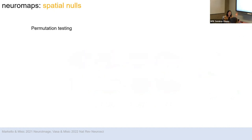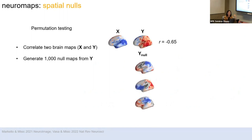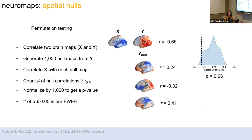To deal with this, we develop spatial null models to assess the significance of correlations above and beyond the effect of spatial autocorrelation. We take our two brain maps, get our empirical correlation coefficient, generate a bunch of null maps, calculate a correlation coefficient for each null map, get a null distribution, and then count how many times the null is larger than your empirical value. You want p to be less than 0.05 — with multiple comparisons correction if you're doing multiple correlations.